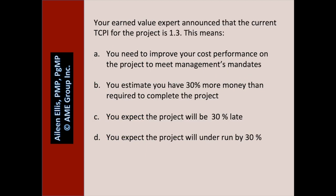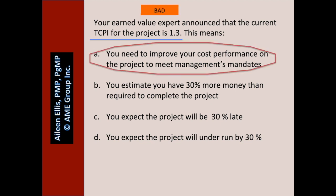Your earned value expert announces that the current TCPI for the project is 1.3. This means — pause the video. A TCPI greater than 1 — is that easy or hard to achieve? It's hard to achieve. A: you need to improve your cost performance on the project to meet management's mandates — A is true; this is hard to do. B: you estimate you have 30% more money than required — B would be a good thing, but that's not what a TCPI greater than 1 means. C: you expect the project will be 30% late — TCPI is about cost performance, not schedule, so C doesn't make sense. D: you expect the project will underrun by 30% — probably not, because our TCPI is so high, which is a bad thing.